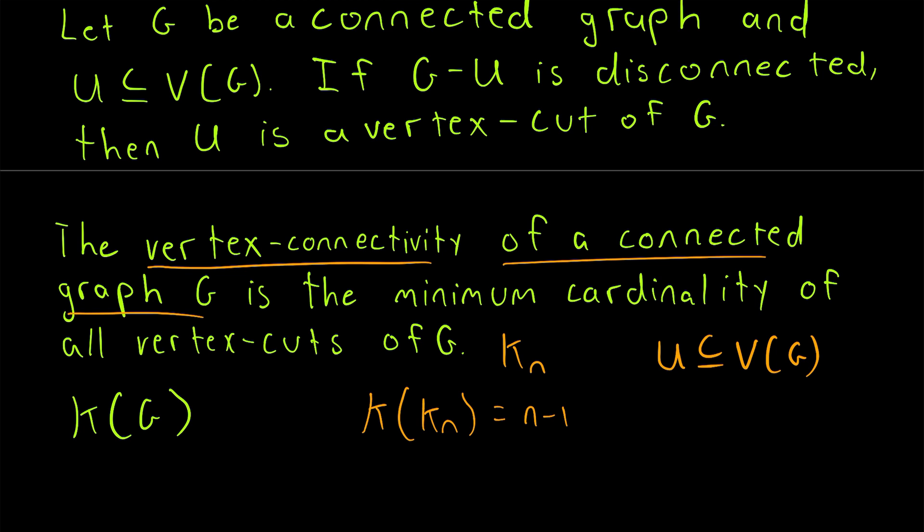the vertex connectivity of a connected graph G is the minimum cardinality of all subsets of the vertex set such that G minus that set is either disconnected or trivial. And so that's how Kappa of G is defined.